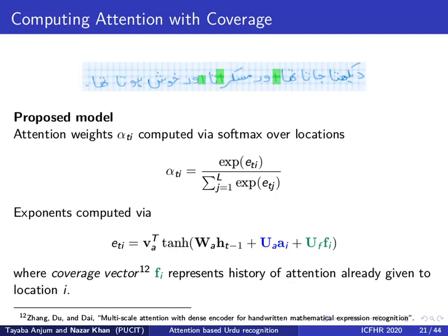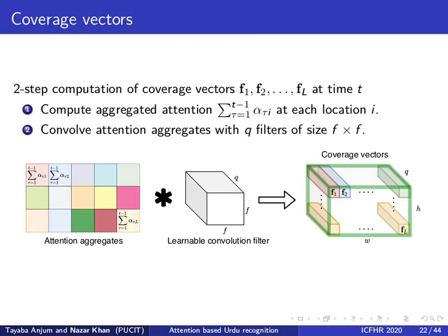In our model, attention at time t is made to depend on previous values of attention. This is achieved through a coverage vector that represents a history of attention already given to each location. We compute coverage in two steps. First, we compute the sum of attentions over time for each region. Then we exploit smoothness of attention by convolving with square convolution filters to extract multiple different features of the attention sums. Just like annotation vectors describe the input image in a static fashion, we obtain a volume of per-region coverage vectors that describe the attention given so far in a dynamic fashion.